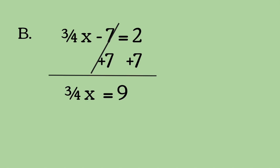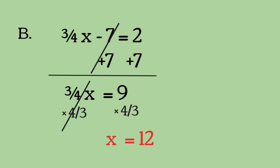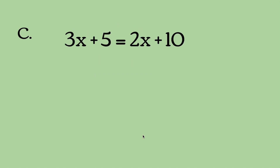For B, we have three-fourths x minus 7 equals 2. We add 7 on both sides and are left with three-fourths x equals 9. Now we divide both sides by three-fourths — when dividing fractions, we use the reciprocal, which is three-fourths flipped, or four-thirds — and multiply that on both sides. 9 times 4 is 36, and 36 divided by 3 equals 12.